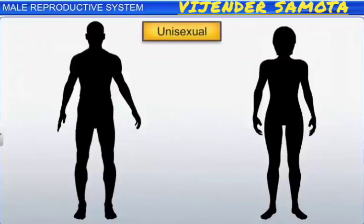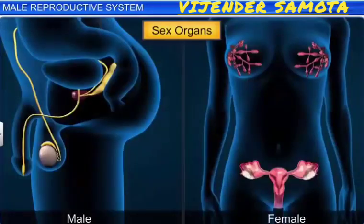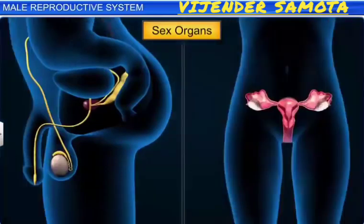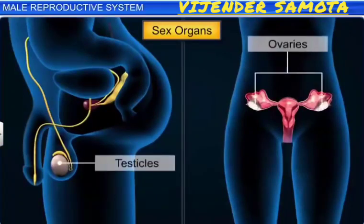Humans are unisexual and viviparous. The major reproductive organs include the external genitalia, like the penis in males and the vulva in females, along with a number of internal organs, including the gamete-producing gonads like the testicles in males and the ovaries in females.